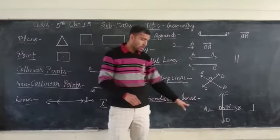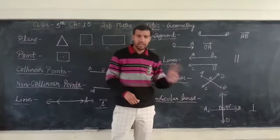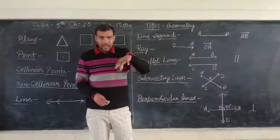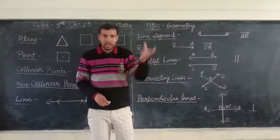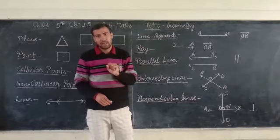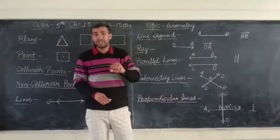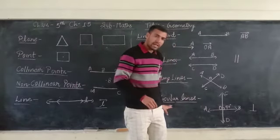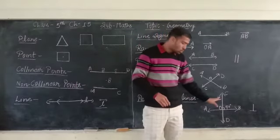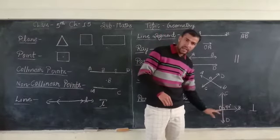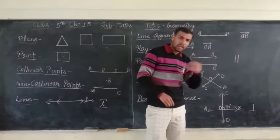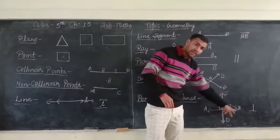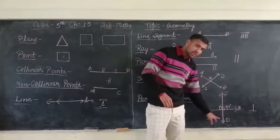Next: Perpendicular lines. When two lines meet at an angle of 90 degrees, those lines are called perpendicular lines.